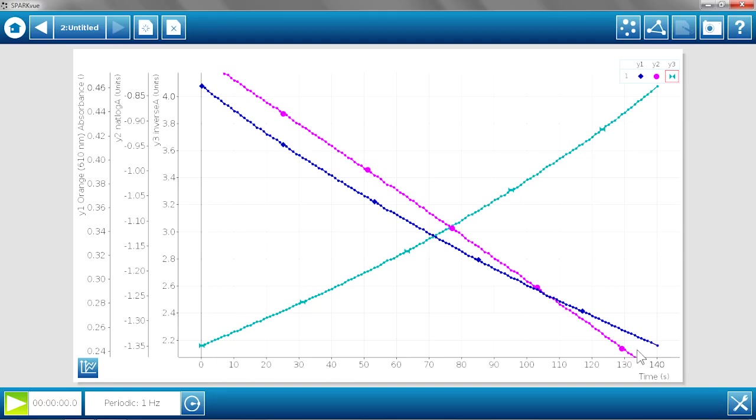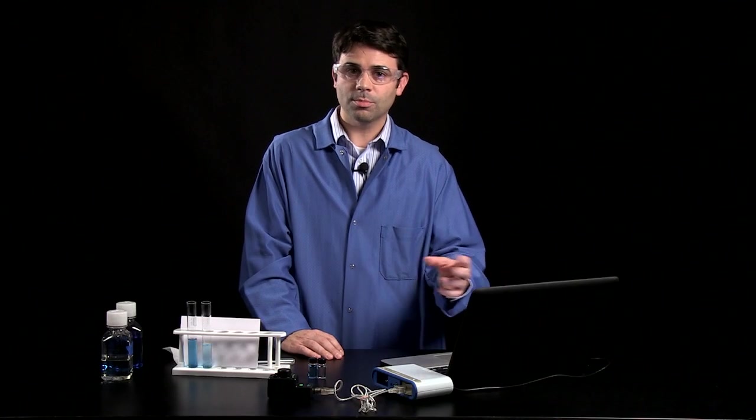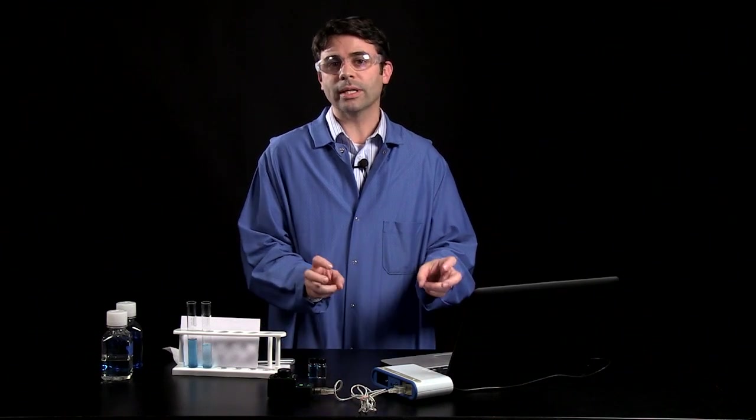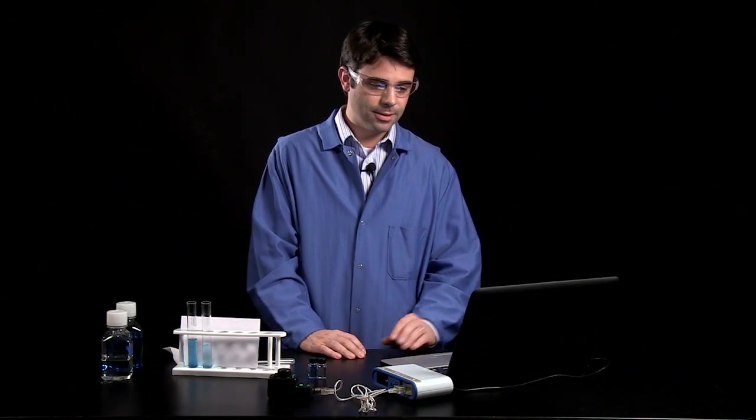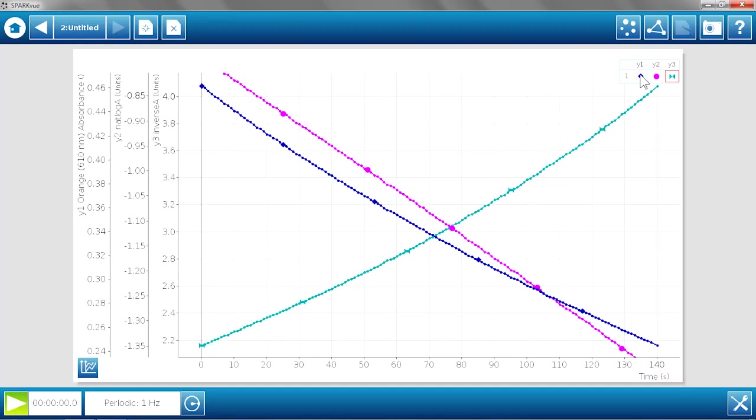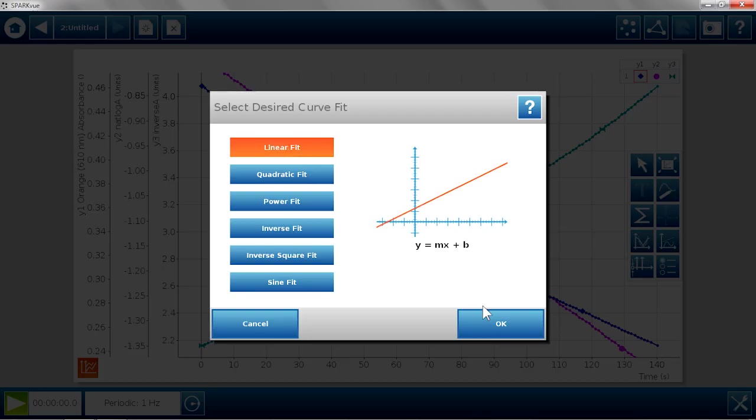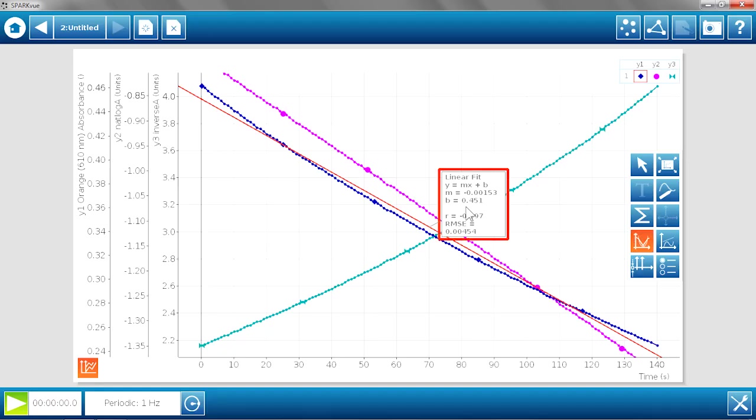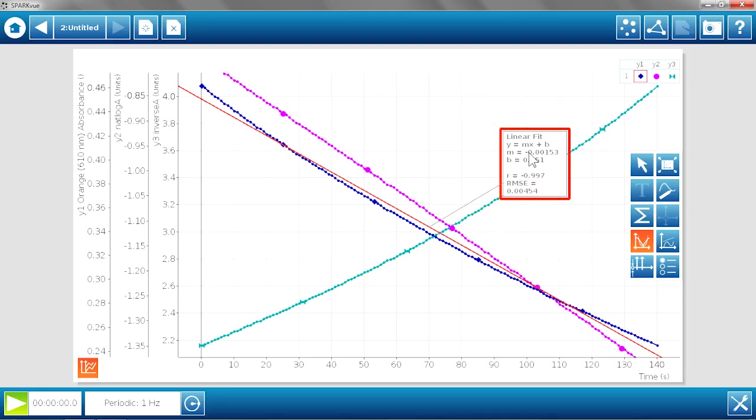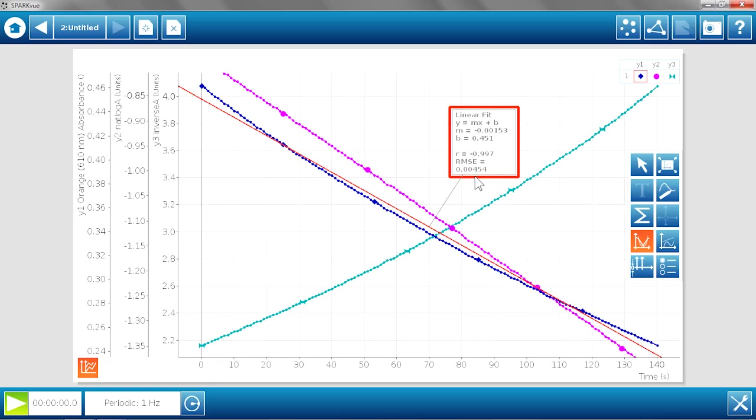Each of them looks fairly straight, but with the SparkView software, we can figure out which one is the straightest, or which one has the best fit. First I'll select my y1, which is absorbance, and I'll do a fit on there. We're looking for straight lines, so we'll do a linear fit. The r in this case is 0.997, with a root mean square error of 0.00454, which is pretty good.